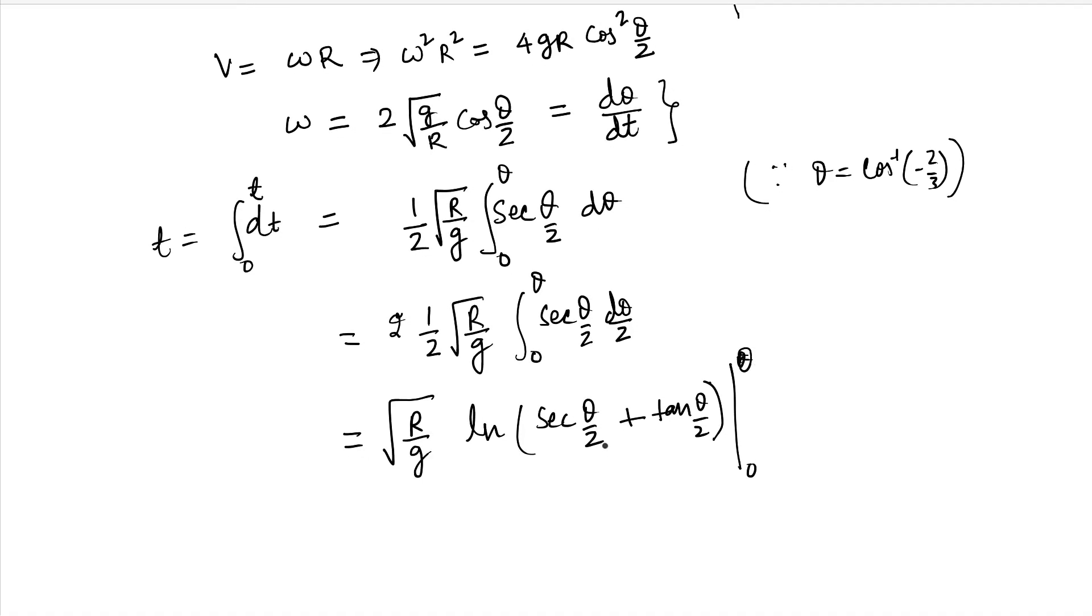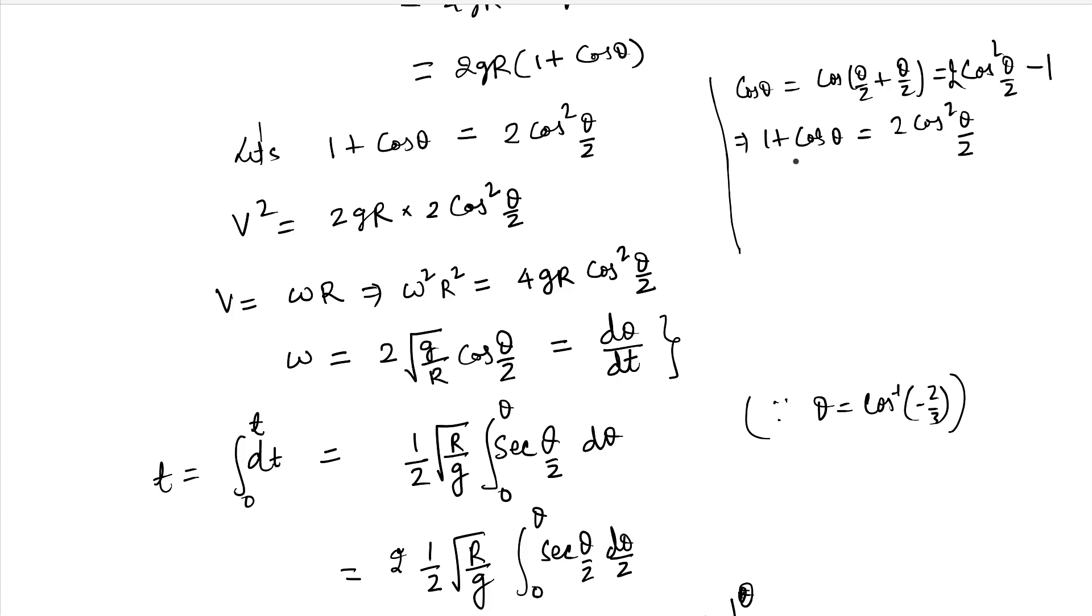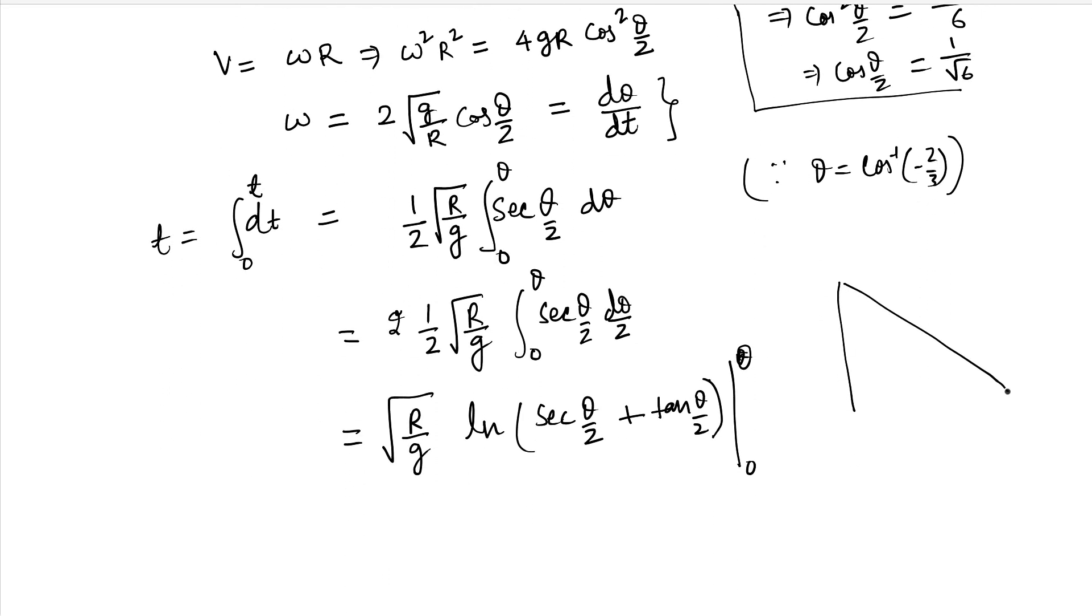Now we should be getting the theta in terms of sec(theta by 2) and tan(theta by 2). From here we already know that cos theta is minus 2 by 3, which is 2 cos square(theta by 2). So that means cos square(theta by 2) is 1 by 3. Therefore cos(theta by 2) is 1 by root 6. If you take a triangle with angle theta by 2, then this is 1, this is root 6, and this is root 5. So sec(theta by 2) is root 6 and tan(theta by 2) is root 5.